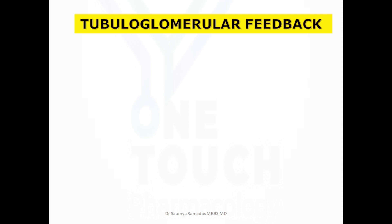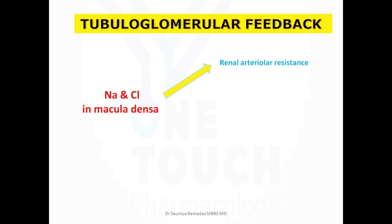The tubuloglomerular feedback mechanism ensures a relatively constant supply of sodium and chloride at the tubules and avoids spurious fluctuations of these solutes. It helps in auto-regulation of renal blood flow and the glomerular filtration rate. The macula densa cells sense the concentration of sodium and chloride and based on these concentrations control renal arteriolar resistance and GFR, ensuring constant delivery of sodium chloride to the distal tubules.